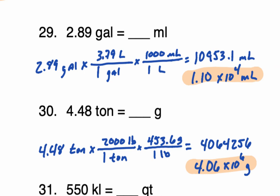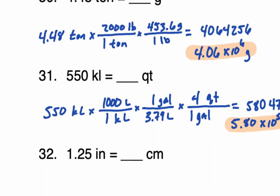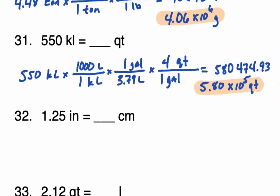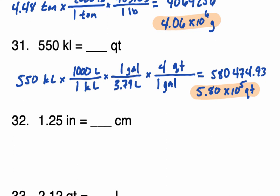In number 29, we have three significant digits. This is an instance where you have to write the answer in scientific notation to represent it correctly. Your calculator would show 1.09531 times 10 to the fourth. Taking only the first three digits, the 5 gets dropped, but since that rounds up the 9, it becomes 10, so we report 1.10 times 10 to the fourth. For 4.48 — three significant digits — we get 4.06 times 10 to the sixth. And for 550 — three significant digits — we get 5.80 times 10 to the fifth, another instance where scientific notation is absolutely necessary to represent the correct number of significant digits.